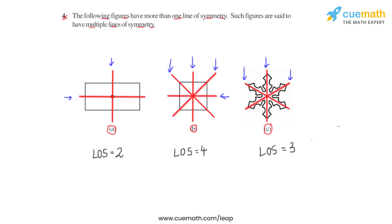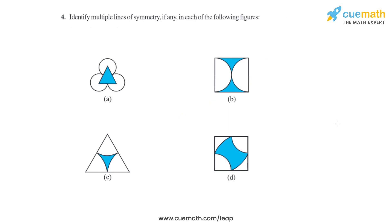Now let us use this concept to find the multiple lines of symmetry, if they exist, for this particular question figure. This is the question statement of question number four. We will have to identify the multiple lines of symmetry, if they exist, for the following figures. Here I have taken the first four figures of the question.